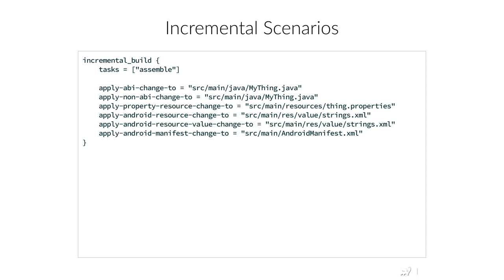It even provides support for incremental scenarios. You can say: for this performance scenario, apply an ABI change to that class, apply a non-ABI change to that class, and run it 10 times. Whenever people reach out to us with performance issues, we ask them to use the profiler and create a profile — it makes things much easier.